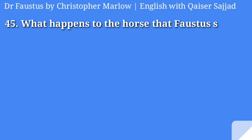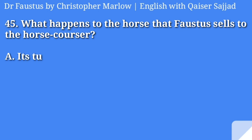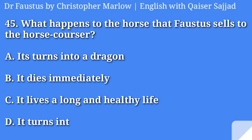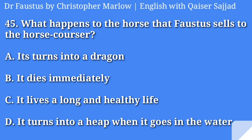What happens to the horse that Faustus sells to the horse courser? It turns into a dragon, it dies immediately, it lives a long and healthy life, or it turns into a heap when it goes in the water? Answer is option D, it turns into a heap when it goes in the water.